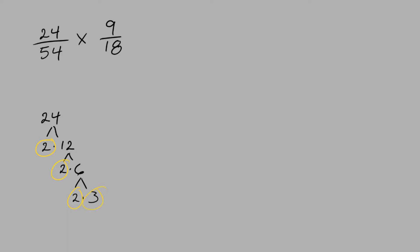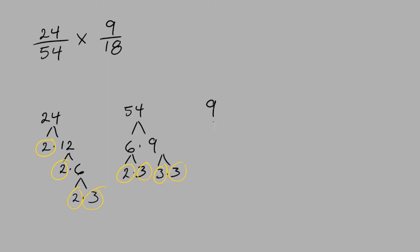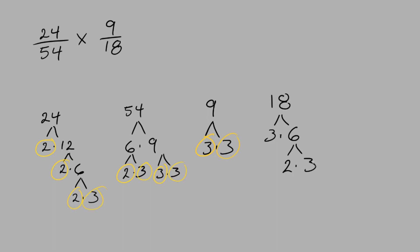We'll do that with each of the numbers. For 54: it can be broken down into 6 times 9, then 6 into 2 times 3 and 9 into 3 times 3, giving a prime factorization of 2 times 3 times 3 times 3. For 9: it breaks down into 3 times 3. And 18 breaks down into 3 times 6, then 6 into 2 times 3, so the prime factors of 18 are 3 times 2 times 3.